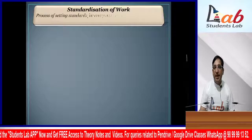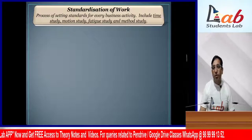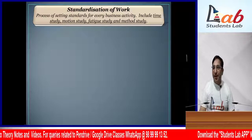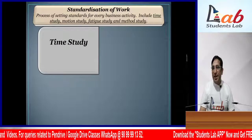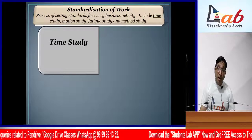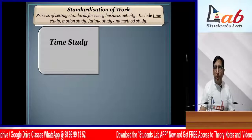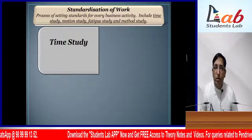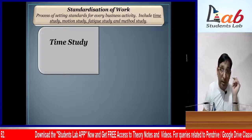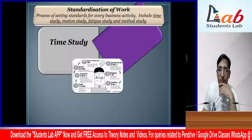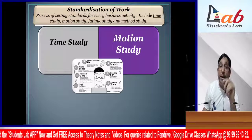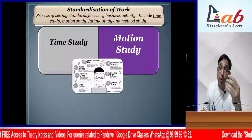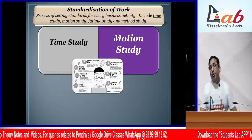After that, Taylor gave the technique of Standardization of Work - meaning every work should be standardized. For this he gave techniques called Time Study, Motion Study, Fatigue Study, and Method Study. Time Study means studying how much time should be taken to do a task. This is very important - if we don't decide how much time a task should take, how will we check who is working efficiently and who is not? Motion Study means removing unnecessary movement during production so that work becomes faster.